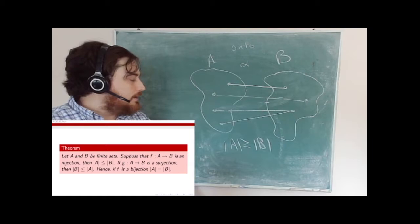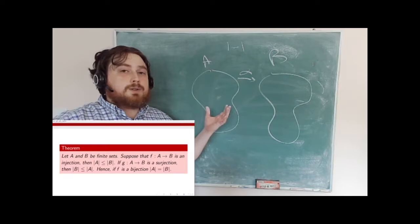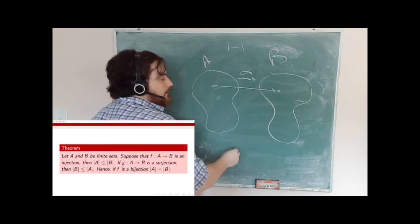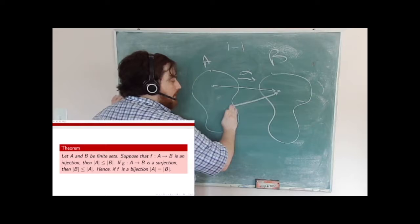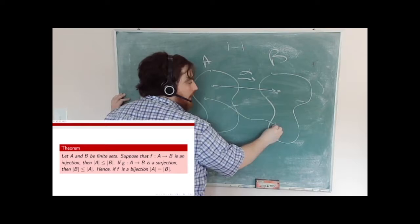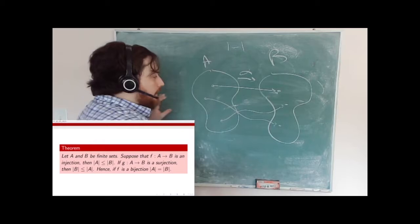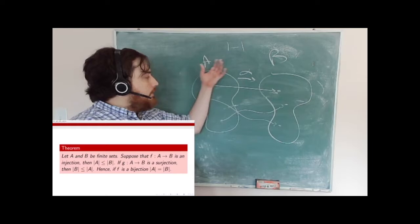On the other hand, if I have a one-to-one mapping, every element in A is going to get mapped to something in B. I can't have two elements mapping to the same place, because that would no longer be one-to-one. So whenever I pick a new element in A, I have to add a new element in B. Every time I add one element in A, I'm going to add another element in B. Therefore, for everything in A there's a unique thing in B, so there are at least as many elements in B as there are in A.